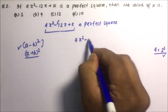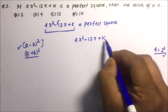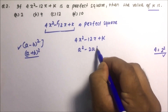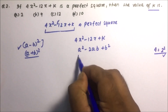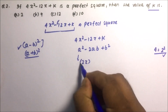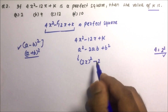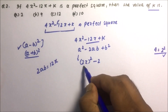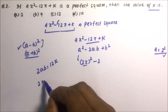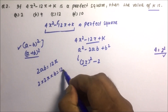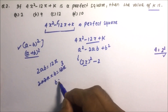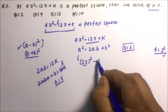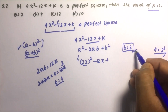We have 4x² - 12x + k and we try to match it with a² - 2ab + b². At the place of a, we have 2x, since (2x)² = 4x². Now, 2ab = 12x, and since a = 2x, we get 2 × 2x × b = 12x, which means 4xb = 12x, so b = 3.